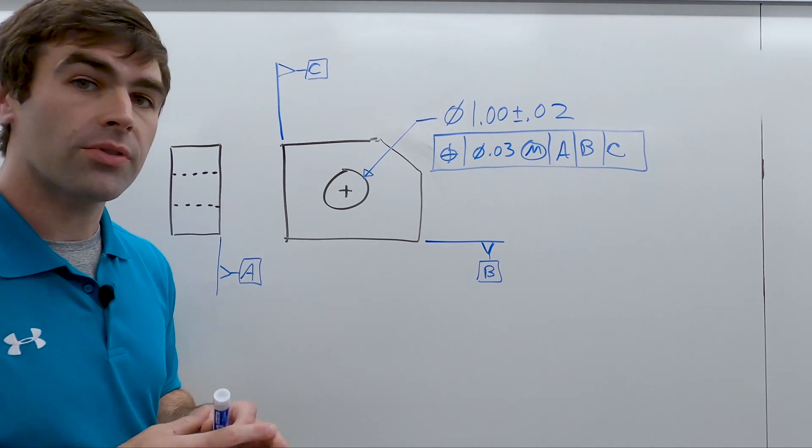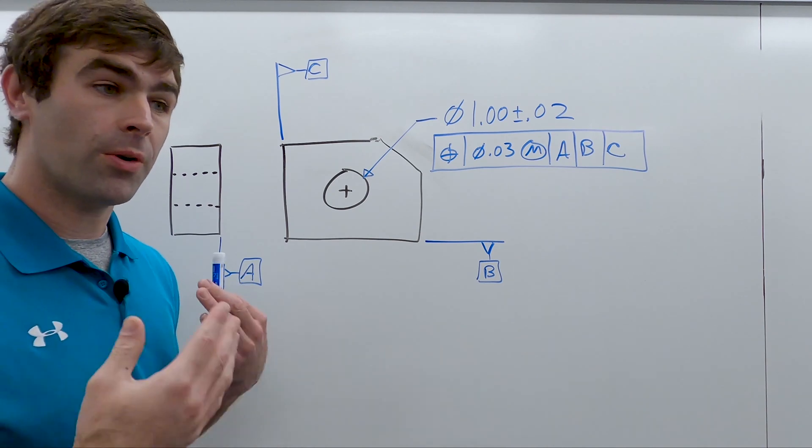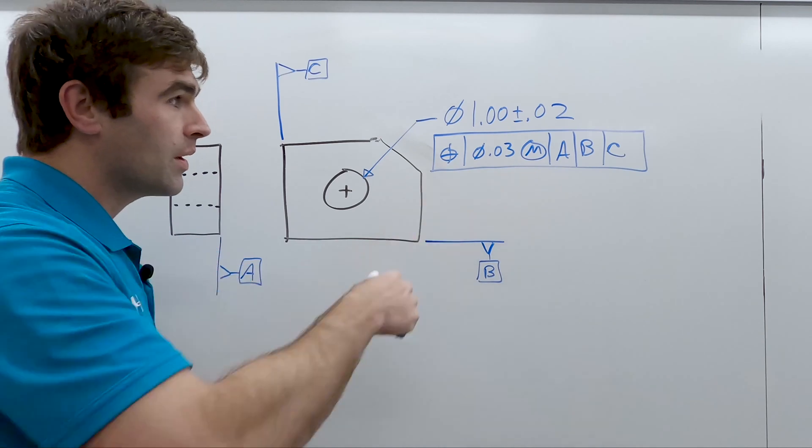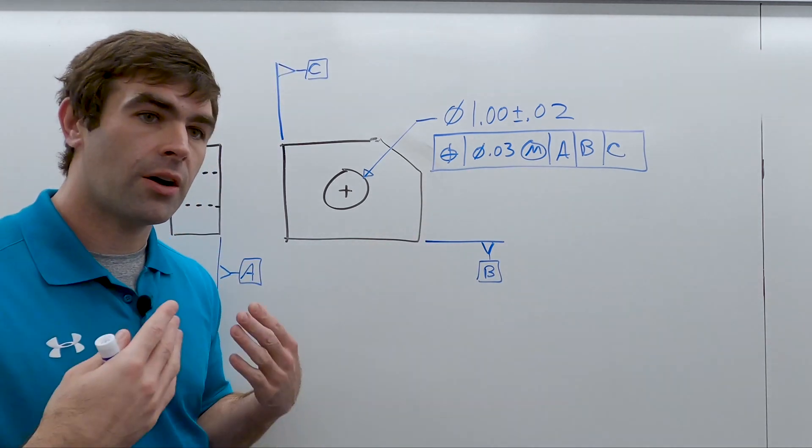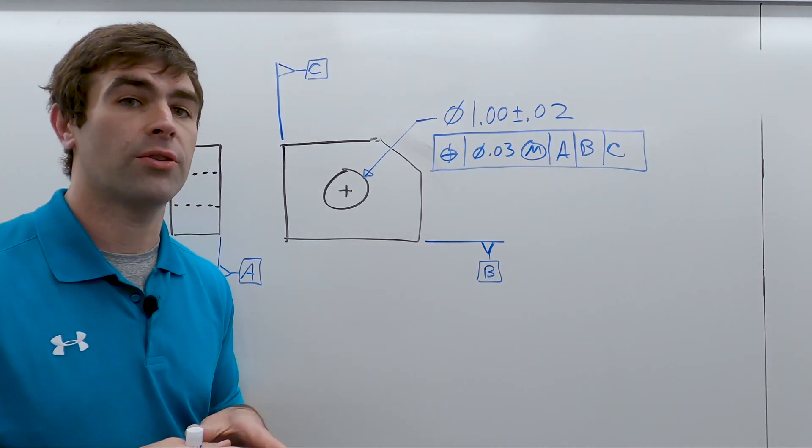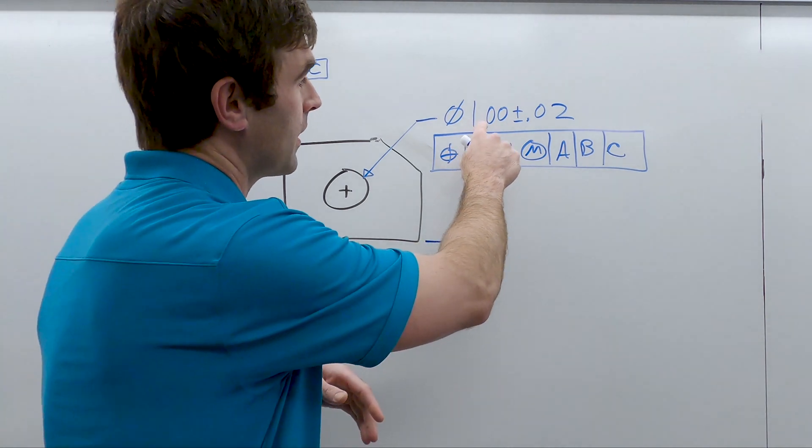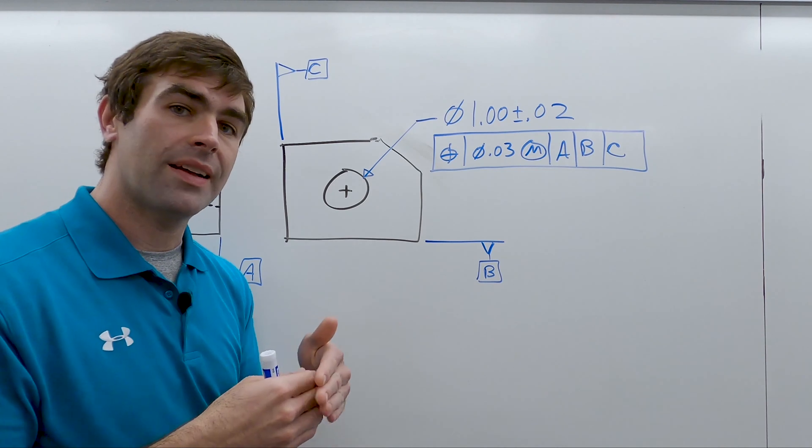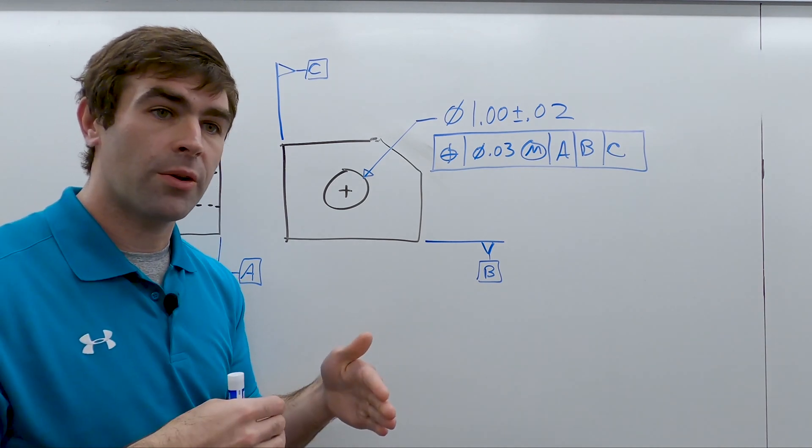In this case, all of our datums are surfaces. They won't always be surfaces though. This, our feature control frame, tells us what the tolerance on that hole is, what the locational tolerance. This right here gives us the size tolerance. So we're splitting up that size and form and location.